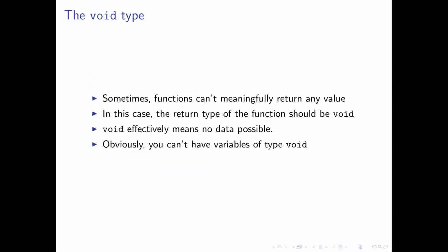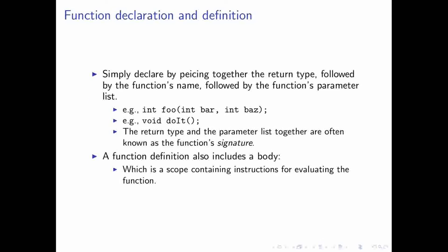You might have a need for a function that doesn't return anything because there's no way to meaningfully return a value. The return type in that case should be something called void, which means that you don't have any data possible. For obvious reasons, you can't have void variables. But you can have functions with void return types, because that actually makes sense. You also have this process of function declaration, and that actually turns out to be different from defining a function itself. You can declare a function by simply starting out with its return type, putting the name of the function, and then in parentheses putting its parameter list. Notice here that the parameters are actually typed. Or you can have an empty parameter list, such as in this void do it function.